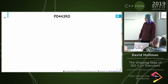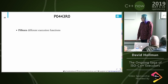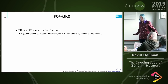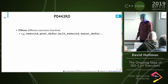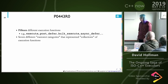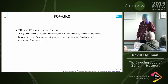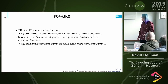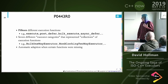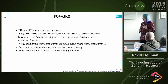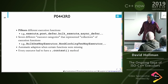The paper produced for Issaquah was P0443R0. It had 15 different execution functions — execute, post, defer, bulk execute — basically taking everything from all three proposals. We made different executor categories, which were like collections of functions that had to be present — roughly what we'd call concepts today. We had bulk one-way executor, non-blocking two-way executor, and so on. Every executor had a context because that was part of the NVIDIA proposal, so we made it mandatory. We were doing the outer product of all the different proposals.